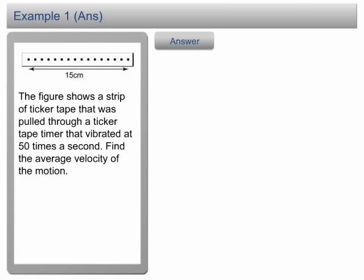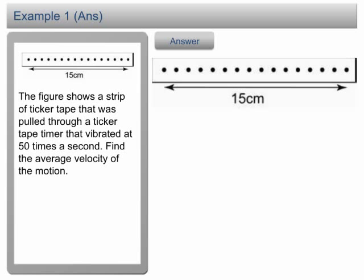Let us have a closer look at the ticker tape. The distance from the first dot to the last dot is 15 cm, which means the displacement is 15 cm.